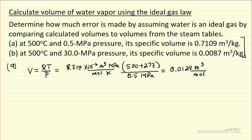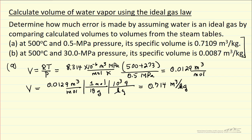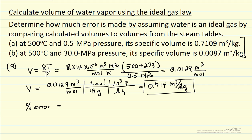Now I want to compare to the steam tables, so I'm going to convert this to cubic meters per kilogram, using 18 grams per mole for water and then converting from grams to kilograms. Here's the ideal gas value — you can see it's quite close. For percent error, I take the difference: 0.714 minus 0.7109, divided by the steam table value, the correct value.